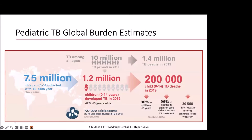For pediatric epidemiology, we don't necessarily see so many pediatric TB cases in the United States, but globally there are about 7.5 million children under the age of 15 who are infected with TB each year. About 1.2 million of those develop TB disease. About half of these are in children under 5, and about 200,000 children die of TB each year. The vast majority, about 80%, are children under 5. About 96% are in children who did not access TB treatment and are likely not being diagnosed. There's also a disproportionate number among children living with HIV.